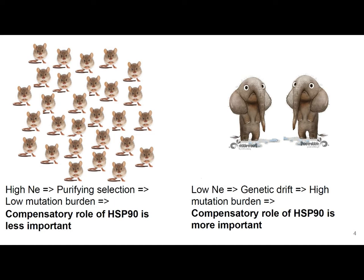If there is a compensatory role of Hsp90 on a long-term evolutionary scale, then we expect it will differ between species with high versus low effective population size. The compensatory role should be more important in the case of elephants, because it should compensate for strong mutation burden, but it should not be as important in high NE species like mice.